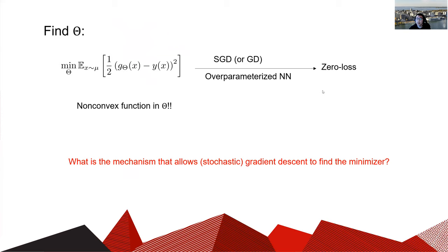To find the best theta we need to optimize the cost function, and in general the cost function from a neural network is always non-convex. According to classical optimization theory, it is very likely that gradient descent or stochastic gradient descent will trap in some local minimum or saddle point. However, in real applications these two methods can always converge to zero loss once the system is over-parameterized. This phenomenon can no longer be explained by classical optimization results.